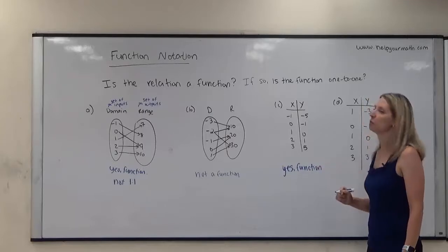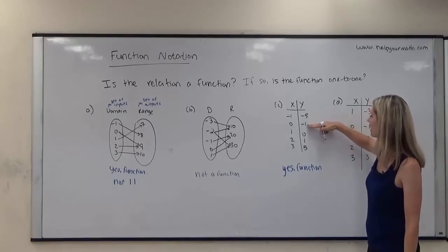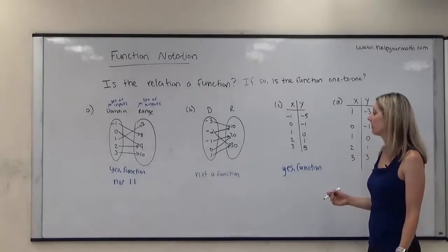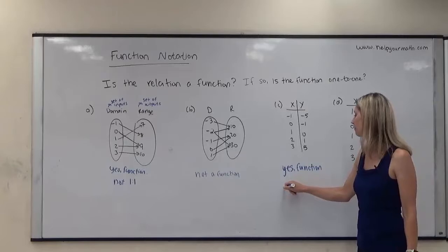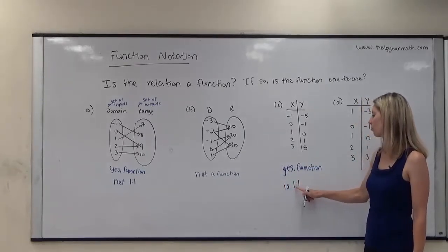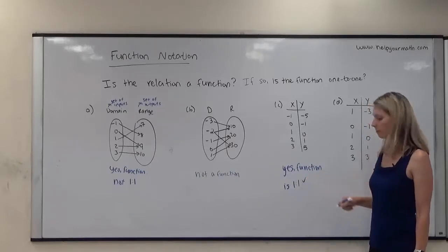But now, to determine whether it's one-to-one, now we do look at the outputs. So the outputs, we have negative five, negative one, zero, one, and five. Since nothing repeats, that indicates that this function is one-to-one. We can say, is one-to-one. Remember, this is just the number one, colon, one, one-to-one. Passes the test.